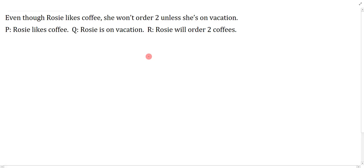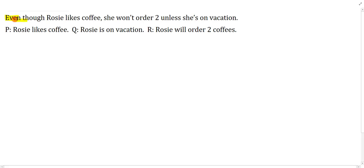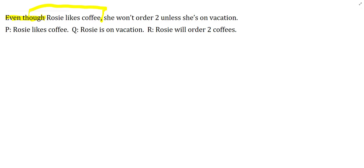Even though Rosie likes coffee, she won't order two unless she's on vacation. We always want to identify the main connectives and main markers here. So 'even though' isn't anything special — it's just a phrase that means 'and.' Even though is an 'and' and it pairs with that comma. Because 'and' is a binary connective, we can start sentences with it, marking off one clause and then the other. So 'Rosie likes coffee' is on one side of the conjunction, and 'she won't order two unless she's on vacation' is on the other.